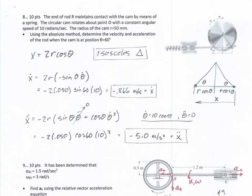The next problem is a CAM problem using the absolute method. Recognizing this is an isosceles triangle, you can say X equals 2R cosine theta. Taking the derivative twice gives X-dot and X-double-dot. Solving for theta equal to 60 degrees and omega equal to 10 (theta-dot equal to 10) gives negative 0.866 meters per second. If theta-dot is constant, theta-double-dot equals zero — but that does not mean X-double-dot equals zero. You still have to take that derivative, plug it in, and you get X-double-dot equal to negative 5.